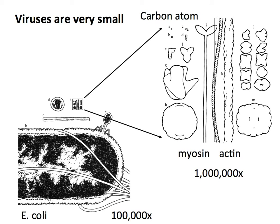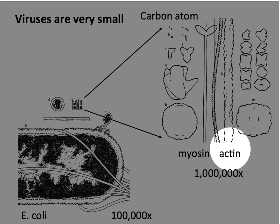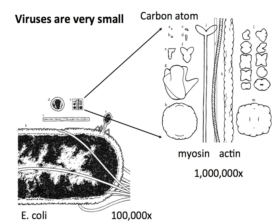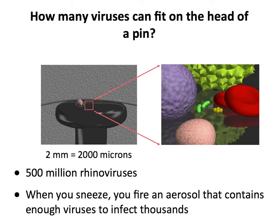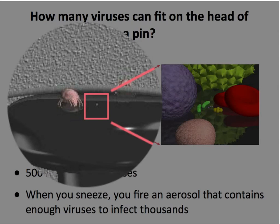Here are some cellular molecules — myosin and actin — to give you an idea. This is now magnified a million times. The answer to the age-old question, how many viruses can you fit on the head of a pin? Well, if you're talking about the common cold virus, about 500 million. So every time you sneeze, you fire an aerosol that has a lot of virus particles. Every droplet that you make when you sneeze has about 20,000 virus particles in it.